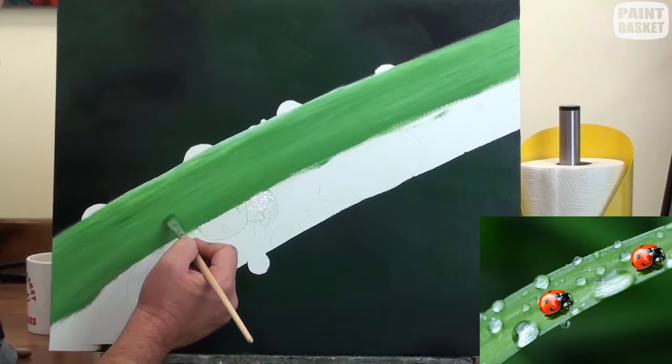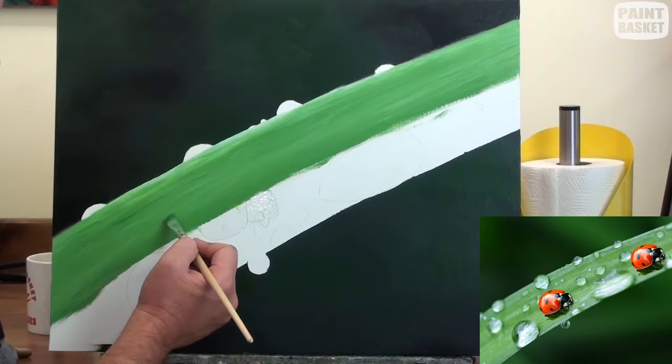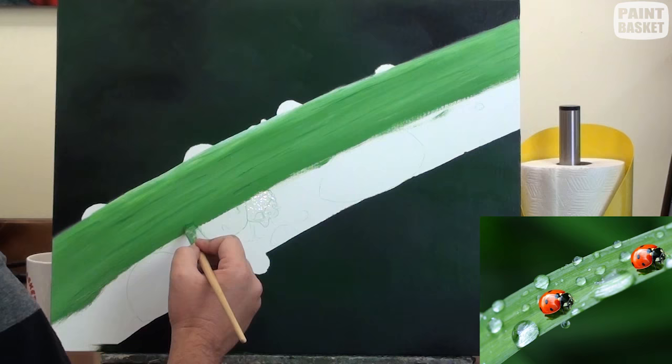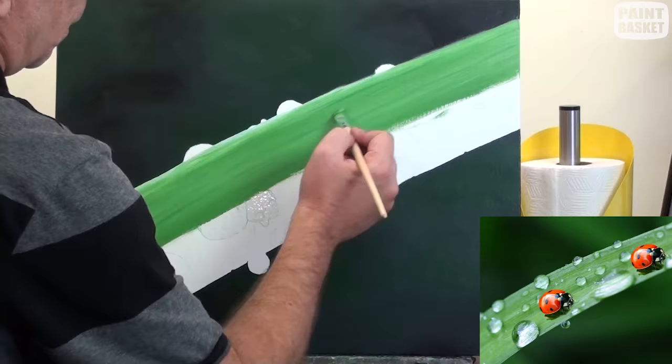To suggest the texture in the leaf, stab in a lighter and a darker green along the length of the leaf. Make these lines random distances from each other and random lengths to make it look natural.